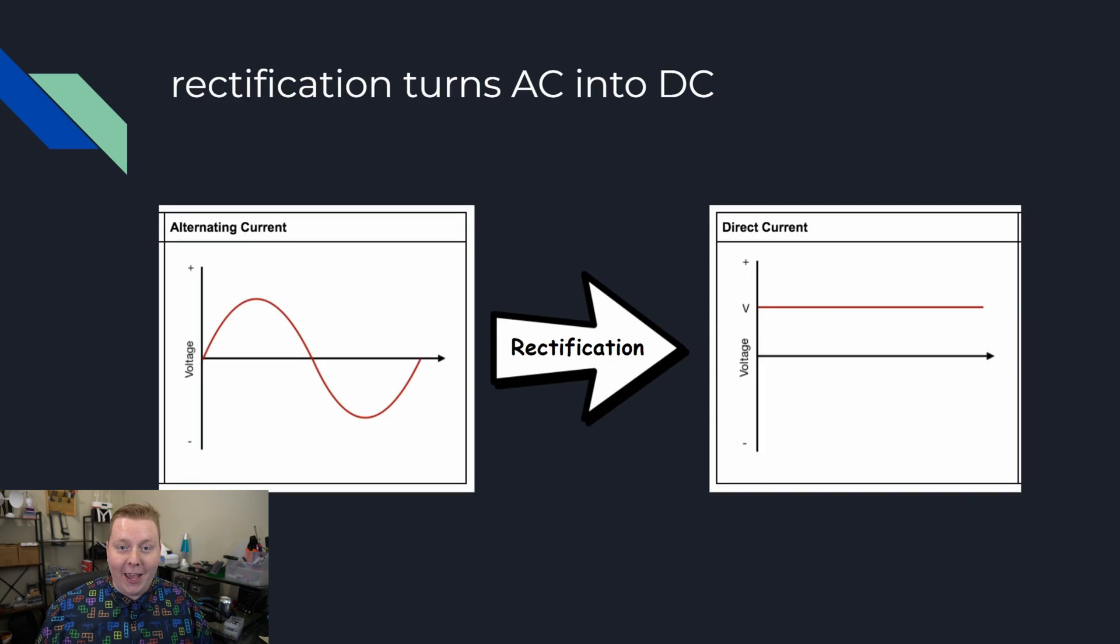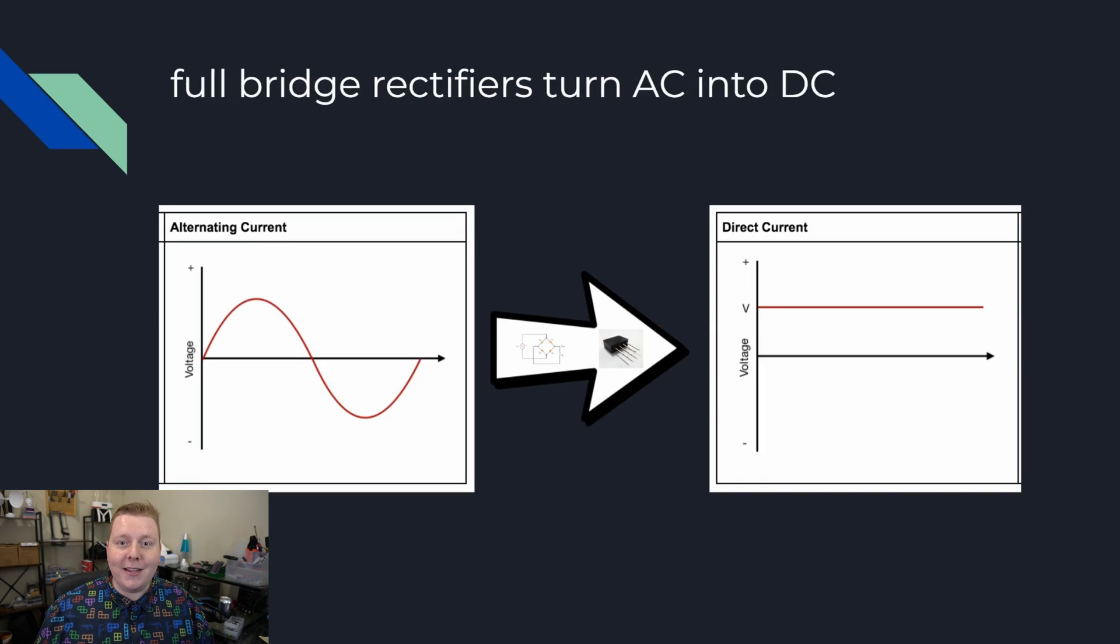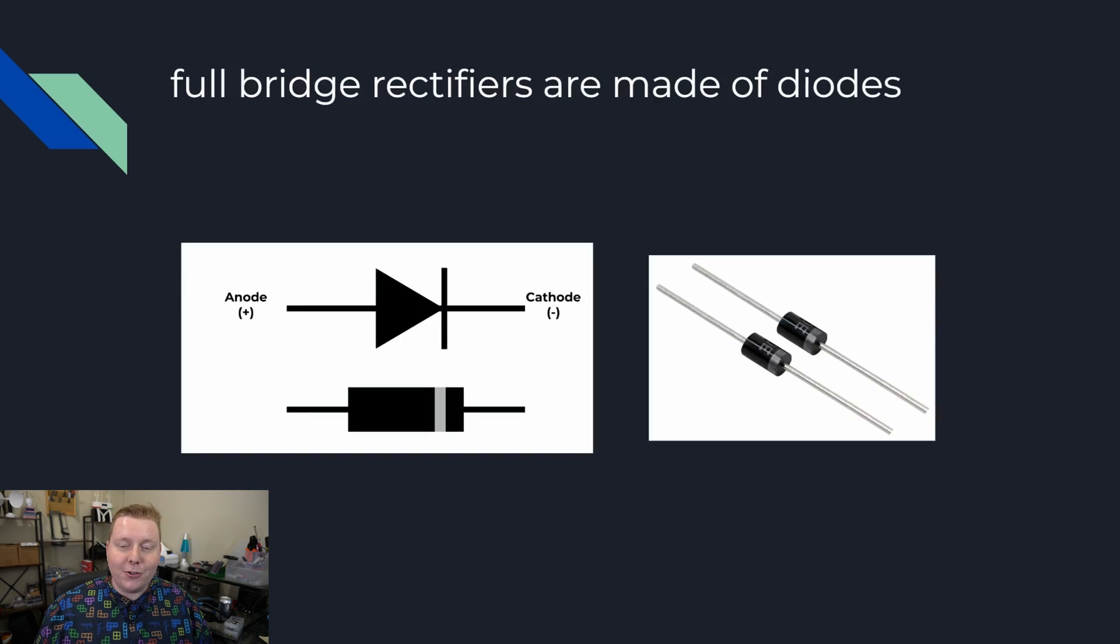Rectification is the process of turning AC into DC. Rectifiers are what turns AC into DC. Rectifiers are made out of diodes.